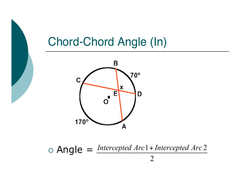An in angle, a chord chord angle, the vertex of the angle is inside the circle. So we're going to have the arc plus the arc, and divide that by 2. So for this one, we take 170 plus 70 and divide it by 2, and that would give us our angle.